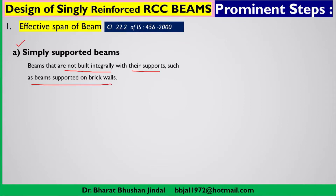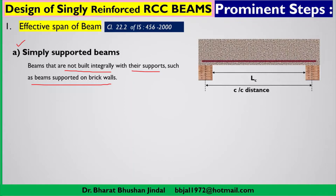To understand this more effectively, we can go through the diagram. Here you can see a beam made up of concrete and steel — this is an RCC beam, and the reddish color lines represent the reinforcement bars. We are considering an RCC beam, that is a reinforced cement concrete beam, reinforced with steel. This beam is supported on two brick walls, and these walls and the beam are not rigidly connected — they are not built integrally with the support.